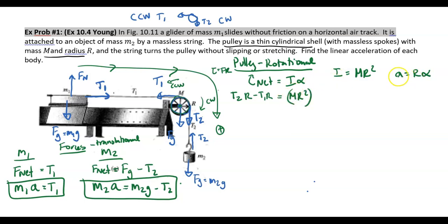Let's go ahead and simplify this a little. So on the right-hand side, we have an R squared and an R. Those cancel out. We have T2R minus T1R equals MRA.